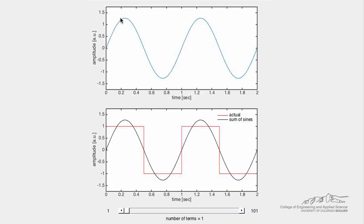Each term in the Fourier series is plotted individually in the top plot. The sum of these individual terms is shown in black in the bottom plot and compared to the actual square wave shown in red.